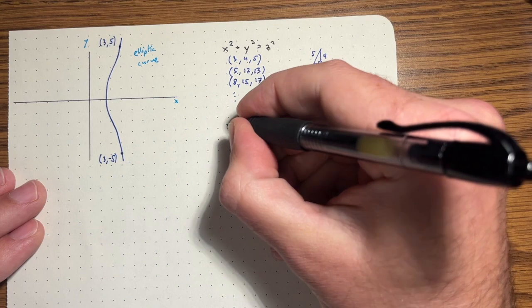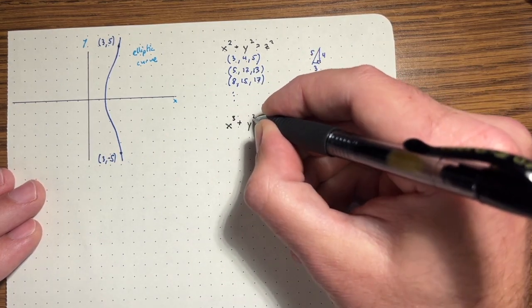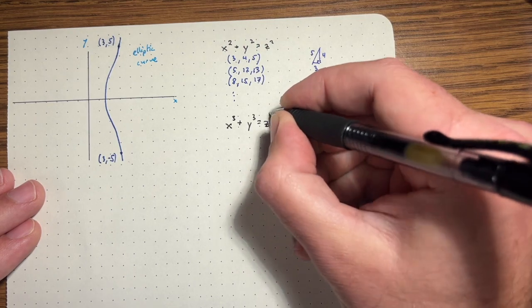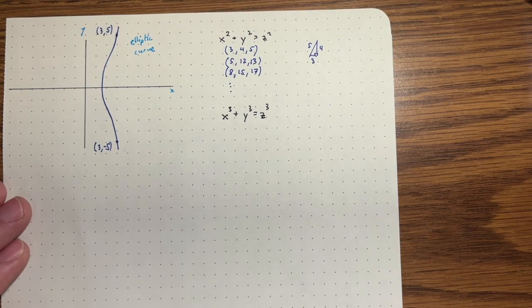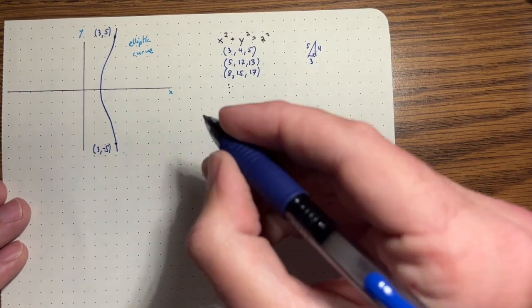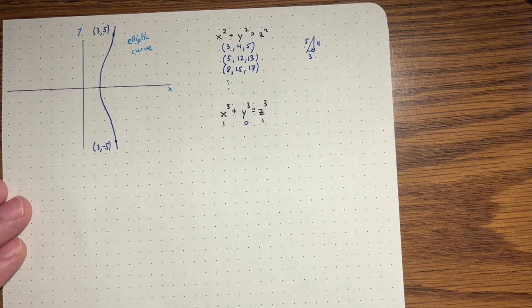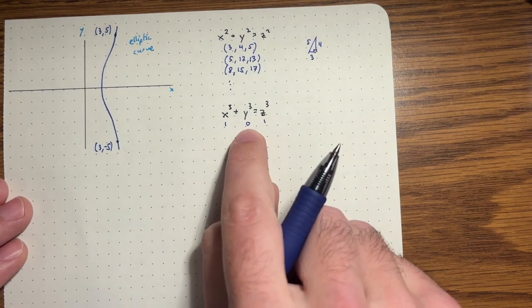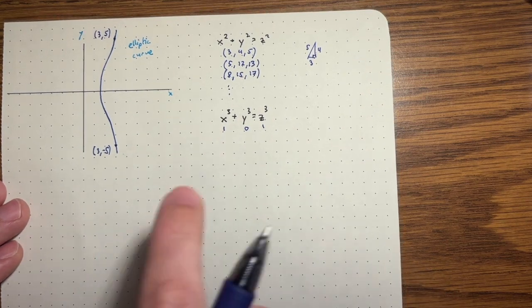However, if I increase the exponent, X cubed plus Y cubed equals Z cubed, and I want integer solutions to this, turns out there aren't any. Well, that's a bit of a lie. So there's some obvious ones. One, zero, one. That works. But if we forbid having zero as one of the three numbers, then there aren't any solutions.